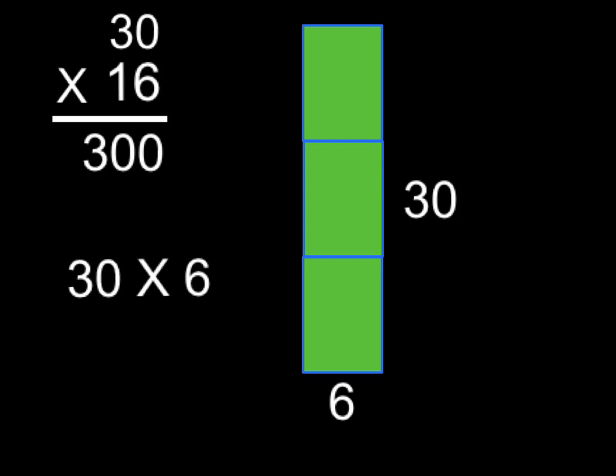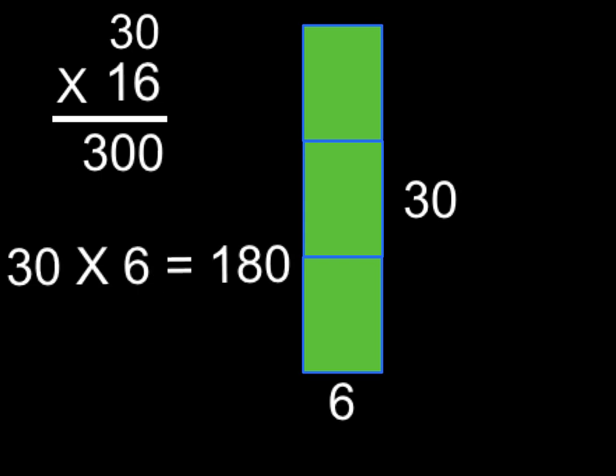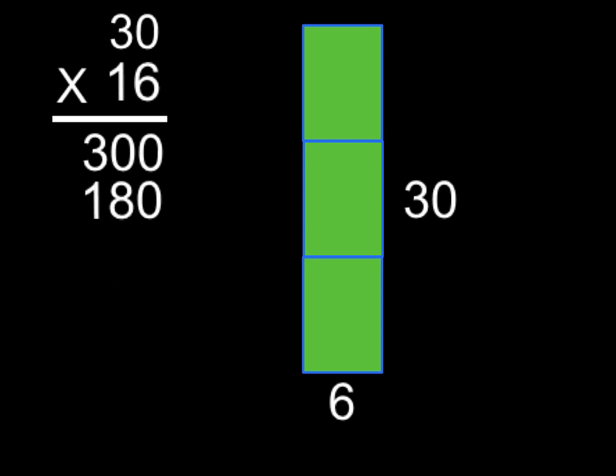Now that we've taken care of the first partial product, now we're going to do the second: 30 times 6. Here's our 30, and now I have 6 rows of 10, which is 180. 6 times 3 is 18, it's in the tens column. The 30 is in the tens column, so we put the zero at the end. Makes it 180.